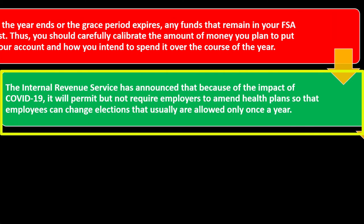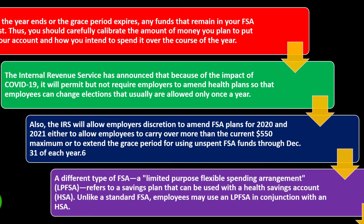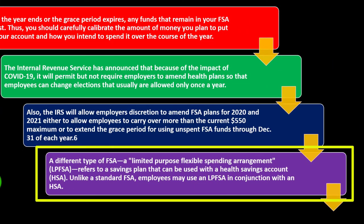The IRS announced that because of the impact of COVID-19, it will permit but not require employers to amend health plans so employees can change elections that are usually allowed only once a year. The IRS also allowed employer discretion to amend FSA plans for 2020 and 2021 — either to allow employees to carry over more than the current $550 maximum, or to extend the grace period for using unspent FSA funds through December 31st of each year.